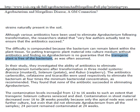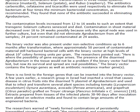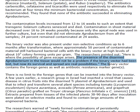Deeper testing shows that up to six months after transformation, approximately 50% of contaminated materials still harbored these bacterial cells, with binary vector at high levels of about 10 to the 7 colony forming units per gram. And here's the major alert: the presence of this disarmed Agrobacterium in the tissue would not be a problem if the binary vector had been lost, but now its survival and spread are real possibilities. The binary vector contains the foreign genes as well as the antibiotic resistance marker genes.